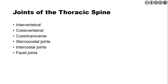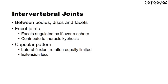As we look at the joints of the thoracic spine, recognize there are numerous articulations — this is where we see the six articulations. We have an intervertebral articulation, a costovertebral, and costotransverse. We then have sternocostal joints and intercostal joints, and finally facet joints, many of which are paired one side to the next. For the intervertebral joints, these are the joints between the bodies, the discs, and the facets. The facet joints are angulated at approximately 70 degrees, with a 20-degree angulation within the frontal plane, contributing to the thoracic kyphosis. The capsular pattern is that lateral flexion and rotation are equally limited, and extension is less than flexion.